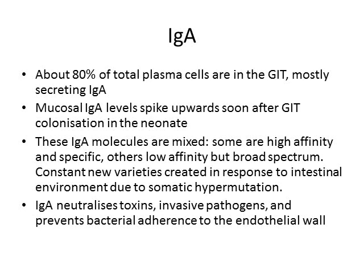Constant new varieties of IgA are made in response to what's happening in the intestines through a process called somatic hypermutation. This means plasma cells are capable of mutating themselves by shifting around DNA sequences within themselves, not just through errors during replication. IgA neutralizes toxins by binding with them, attacks pathogens, and also prevents bacteria from sticking to the endothelial wall by binding on their receptor sites before they have a chance to bind, thereby preventing invasion of the endothelium.